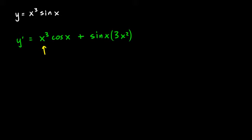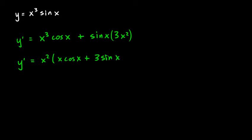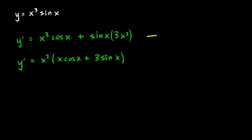Now if you want, you can factor a little bit. Notice there's an x cubed and an x squared, so we could factor out an x squared from each term. If we do, we get x squared times (x cosine x plus 3 sine x). It's good to be able to change from one form to another — on a multiple choice exam, one of the answer choices might be in factored form, so you need to know the two forms are equivalent.